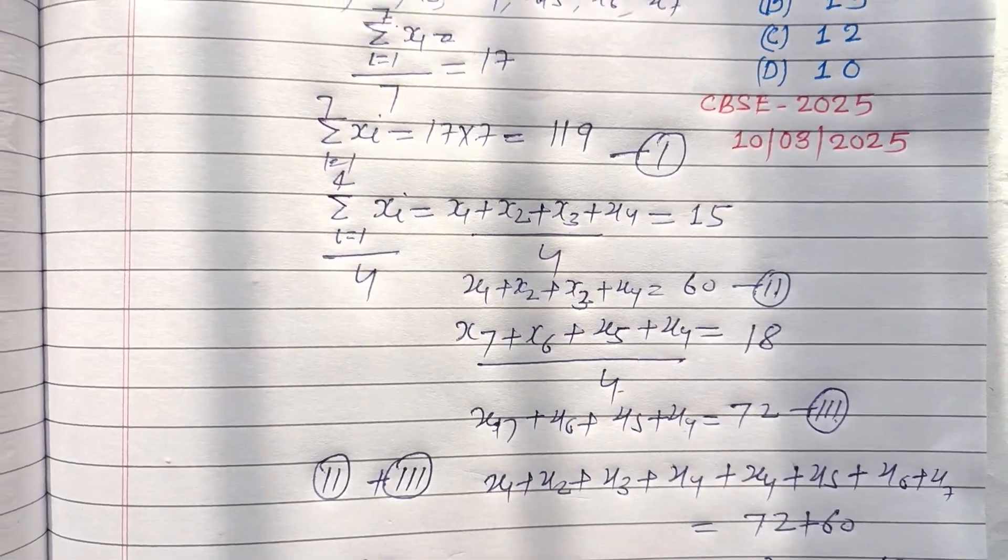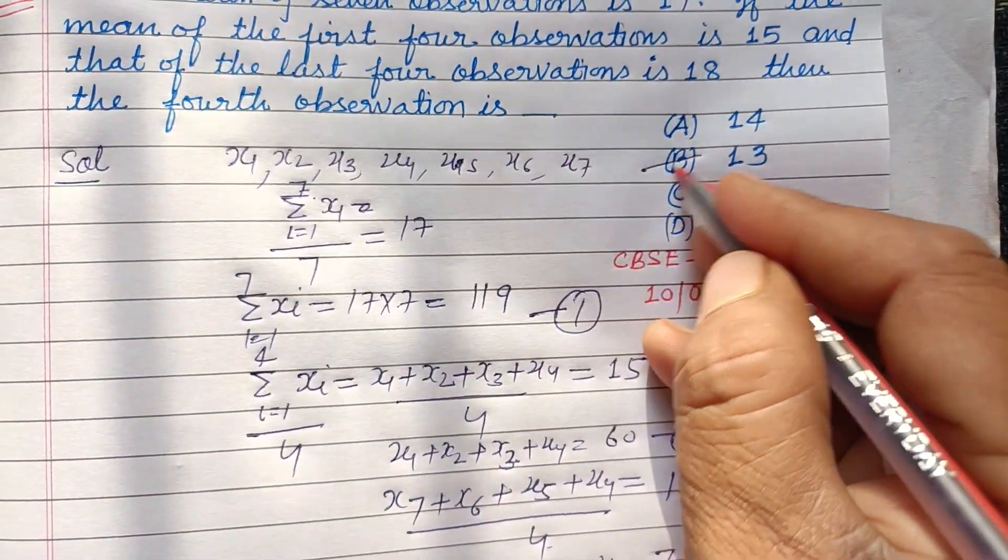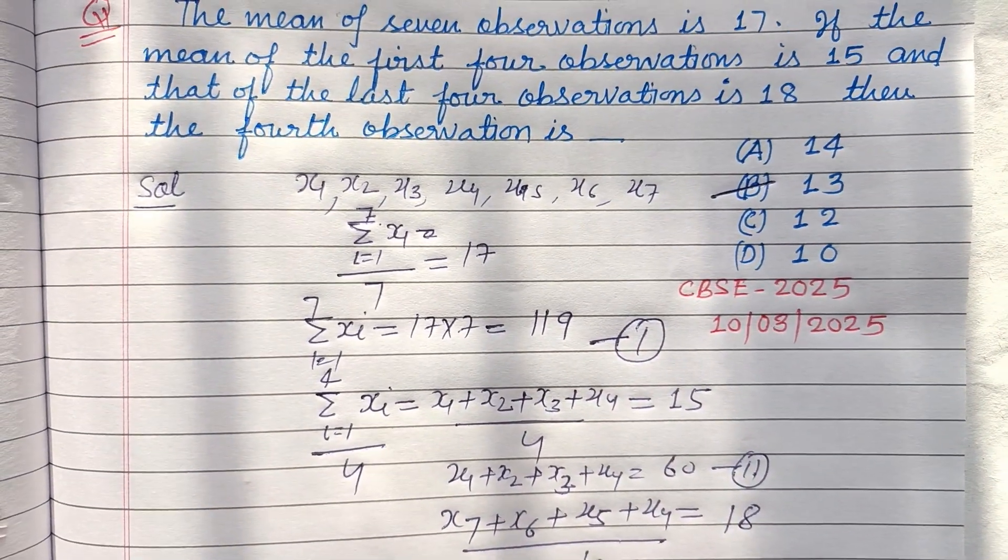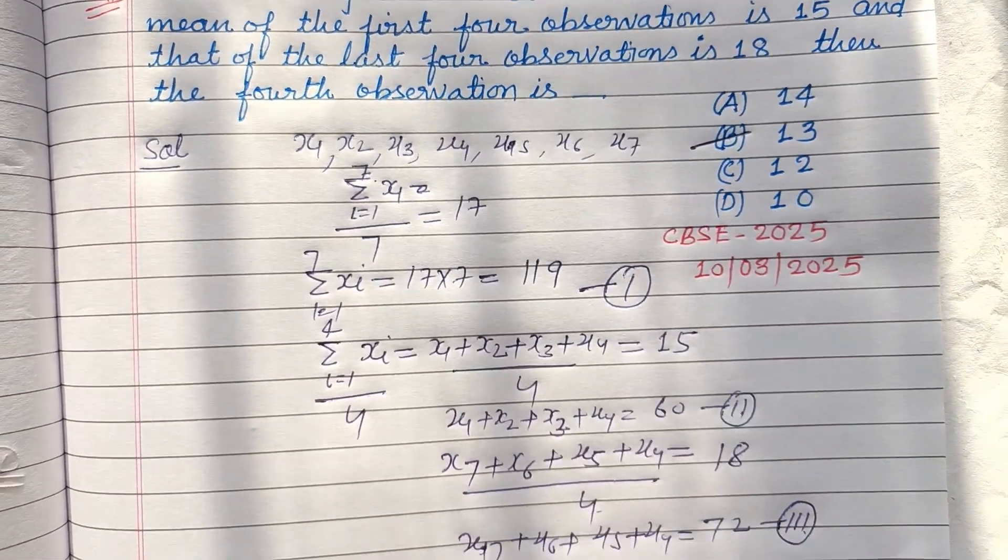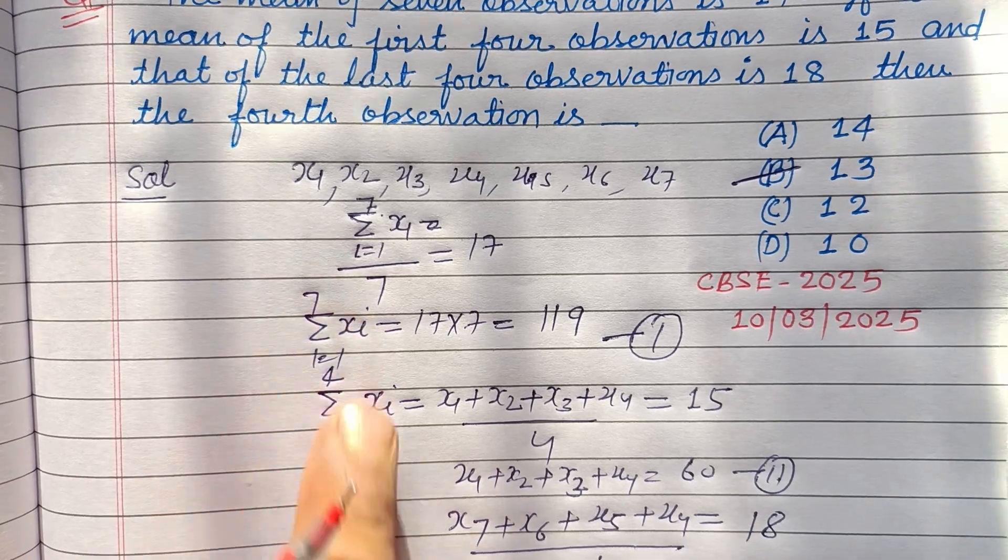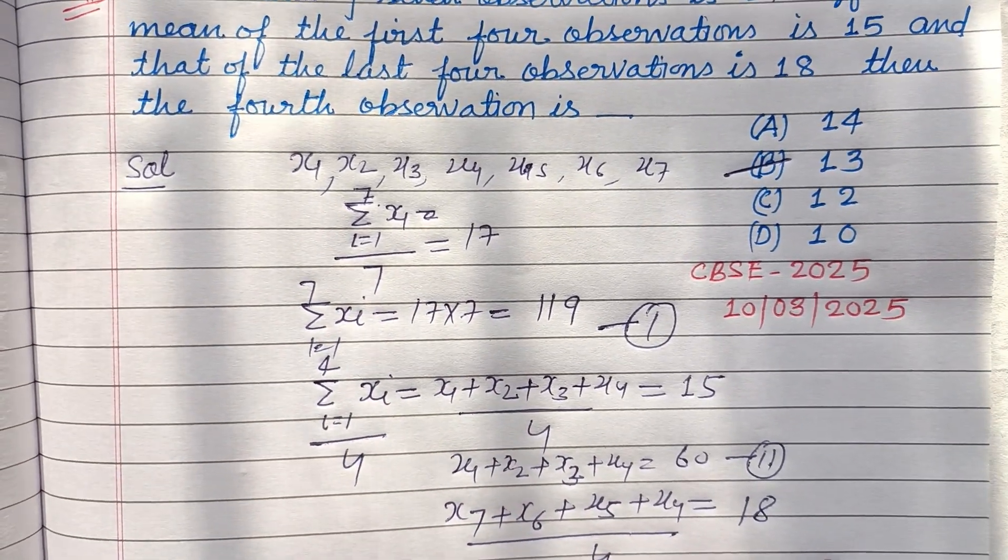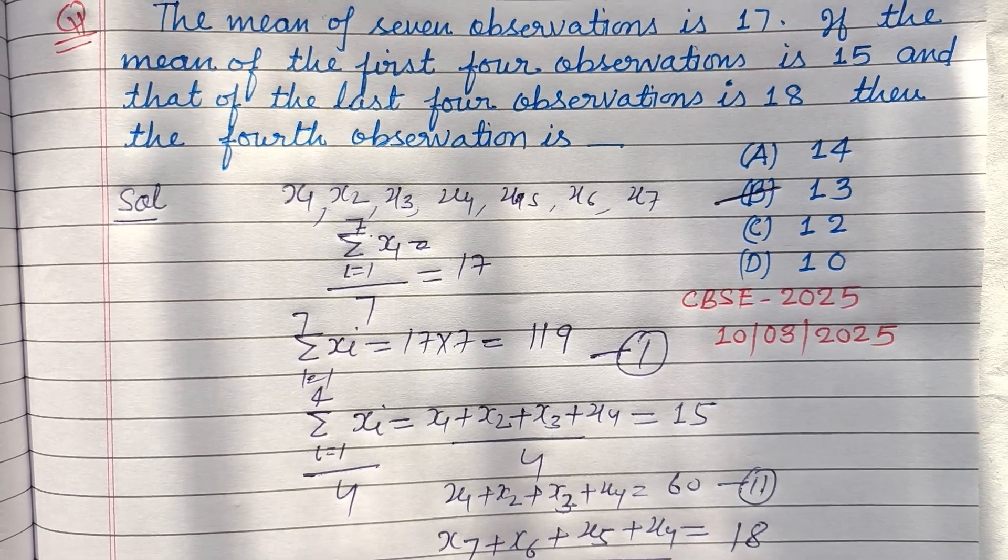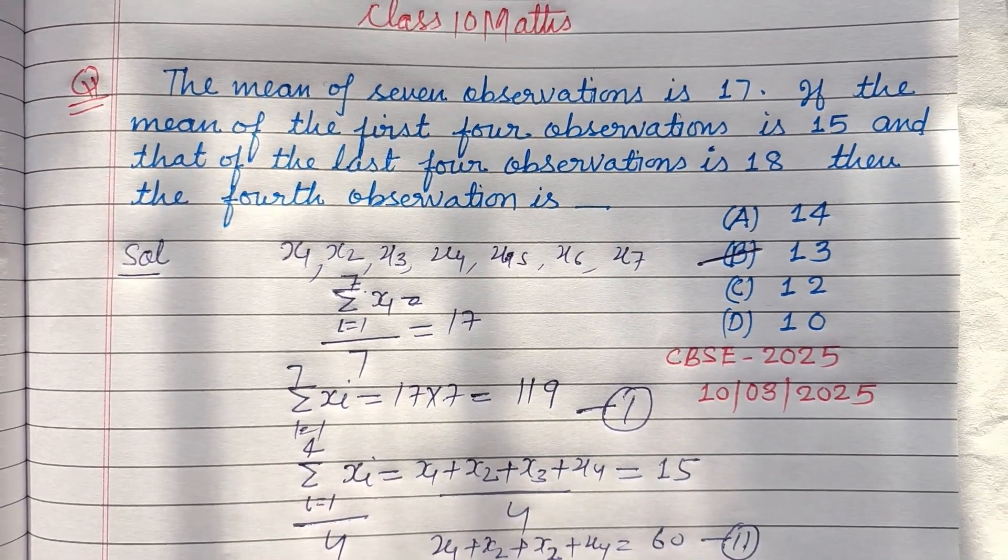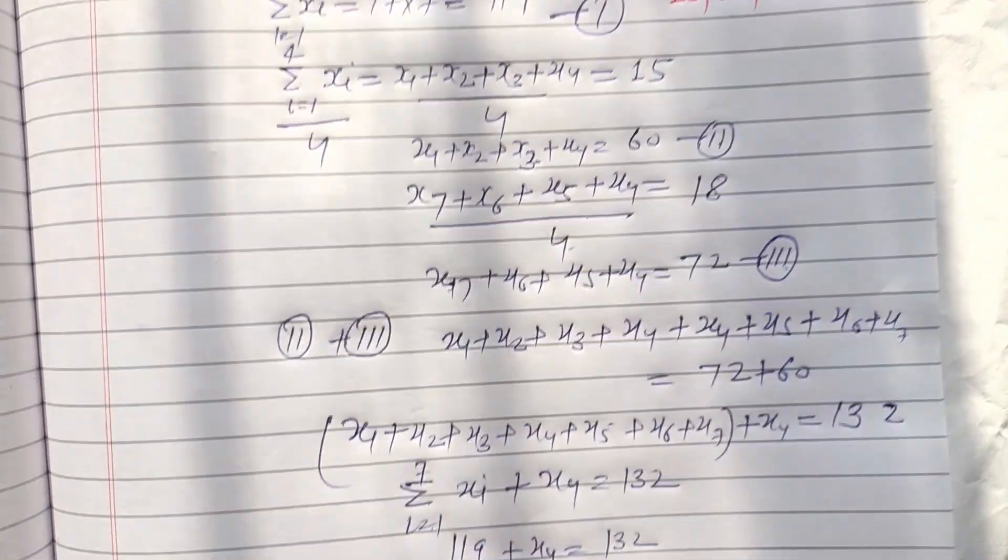So 13 is the correct answer of this question, which is found in option B. So option B is correct. Students, this is not a long question. If we remove these steps and solve immediately, we can easily solve it in one or two minutes. I hope you got it. Please like the video, subscribe to the channel. Thanks for watching.